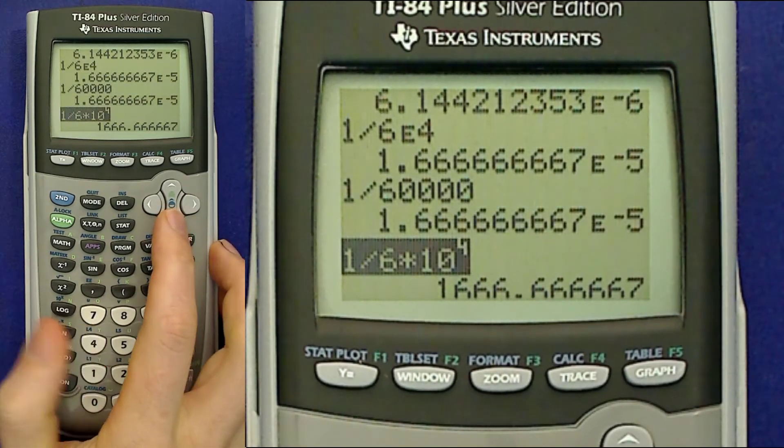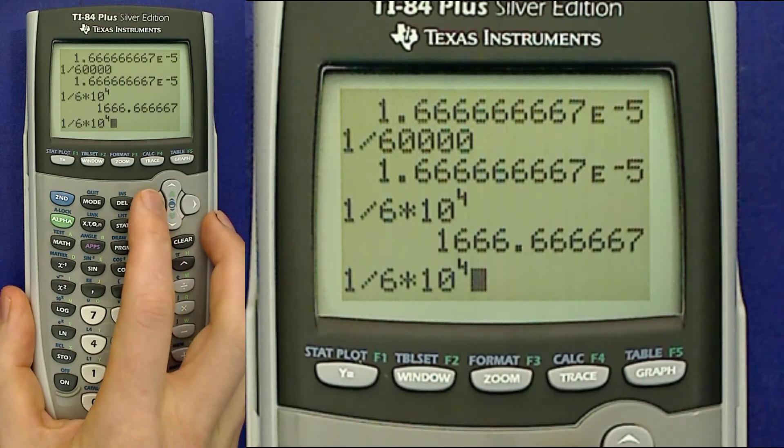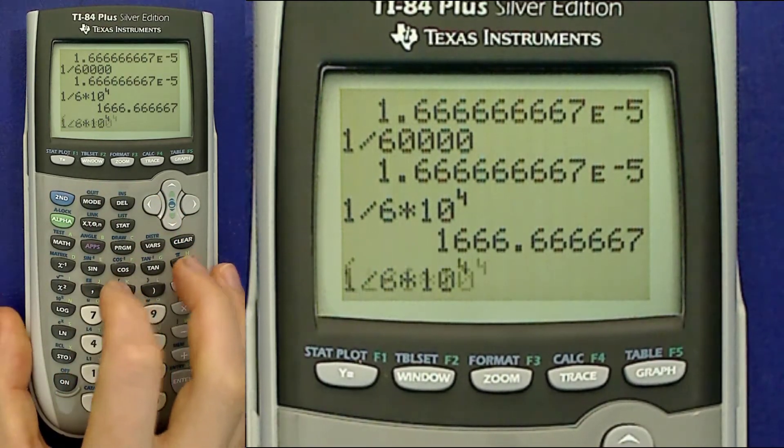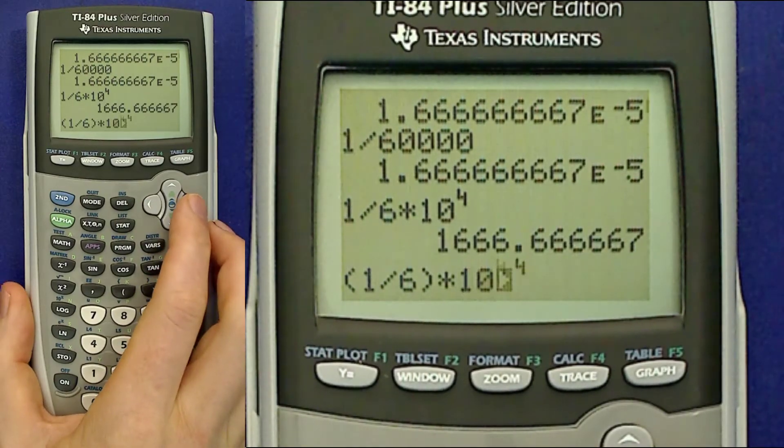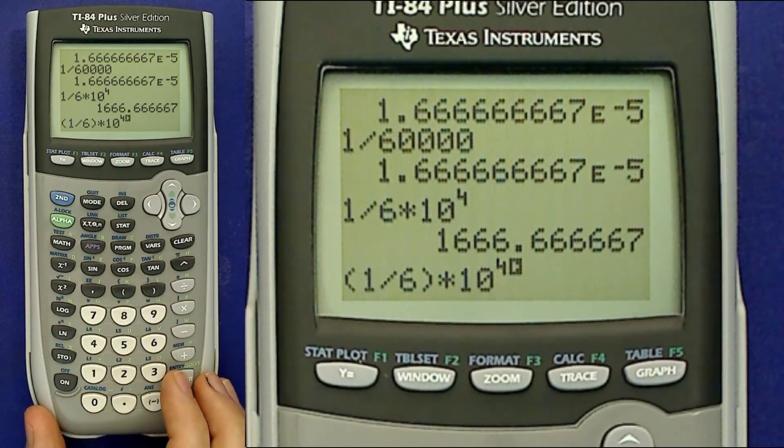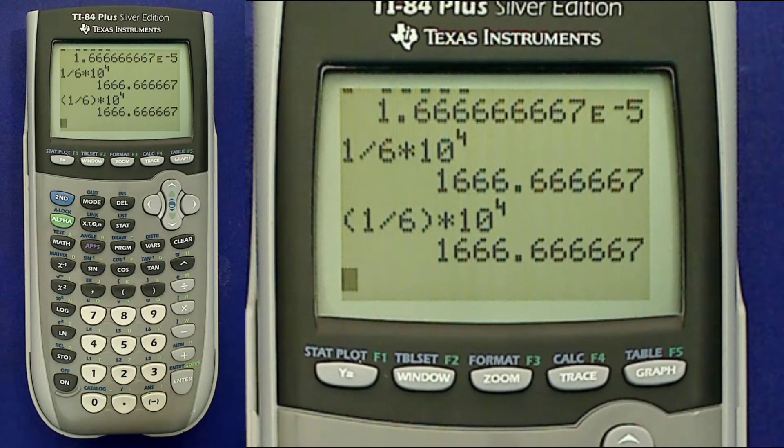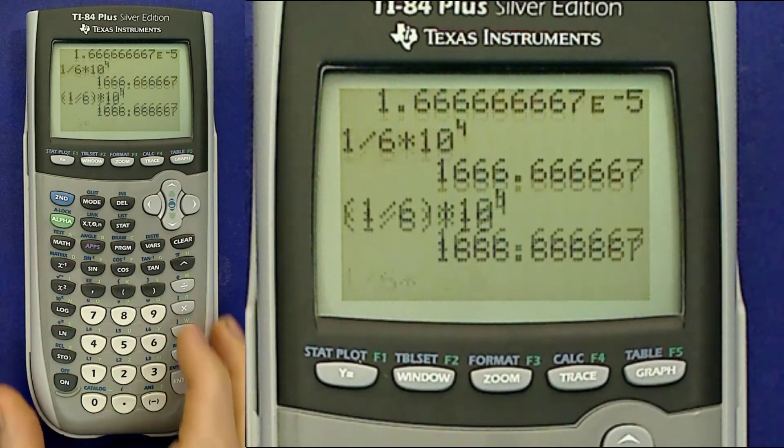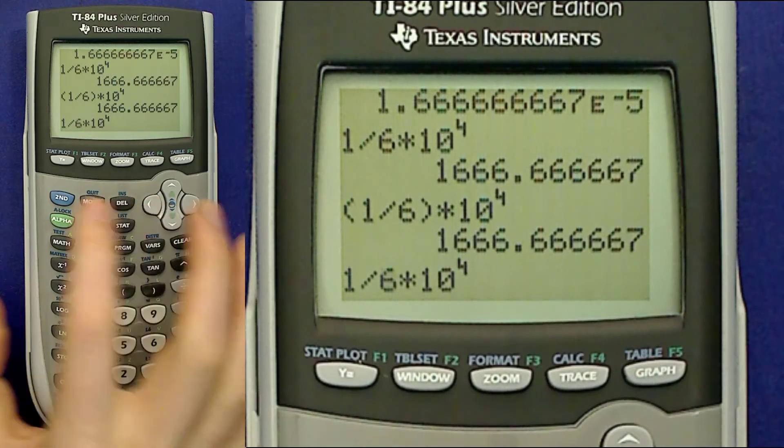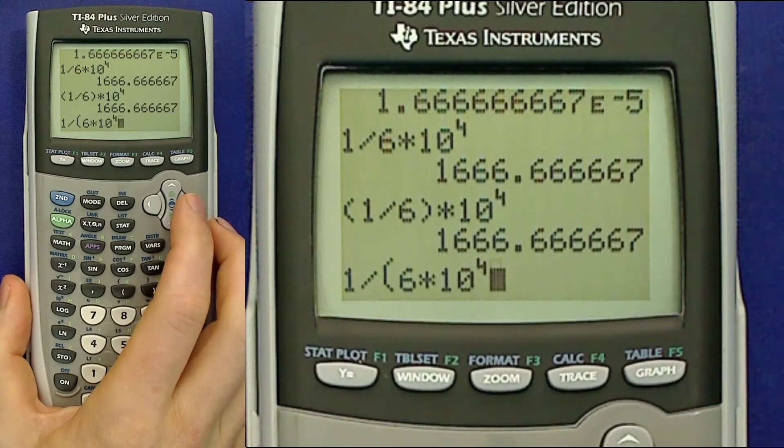However, if I type it like this, the calculator actually interprets the multiplication as happening after the division. So this is interpreted as 1 sixth, then multiplied by 10 to the fourth. And that's why it comes out to be 1,666. If I want 1 divided by the number 6 times 10 to the fourth in this notation, I have to put parentheses around the 6 times 10 to the fourth.